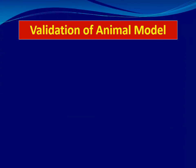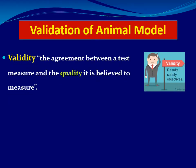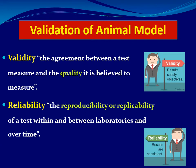Validation of an animal model has two major domains. The first is validity — meaning that the results of the animal model are satisfactory relative to the objectives, i.e., the agreement between a test measure and the quality it is believed to measure. The second is reliability, reproducibility, or replicability — meaning the same interventions performed under the same standardized conditions, in the same or different labs, over time, give the same results.